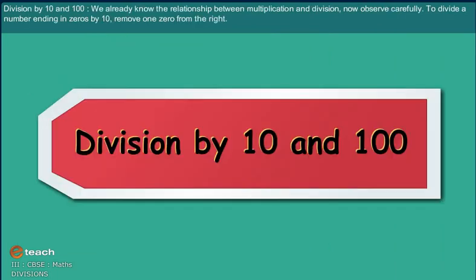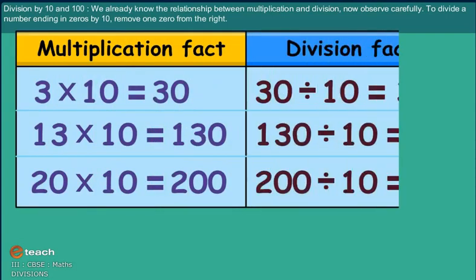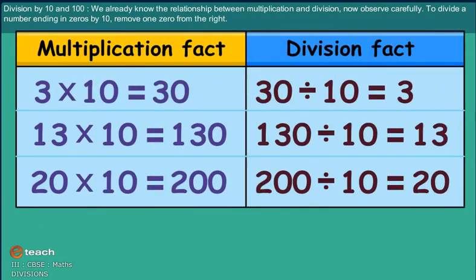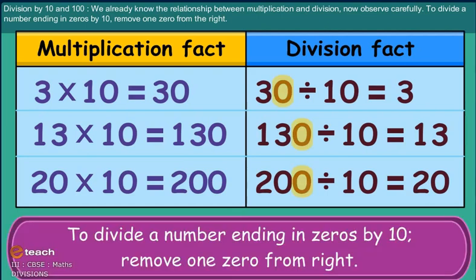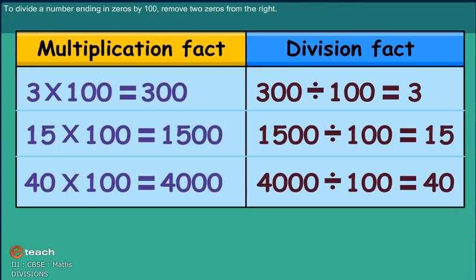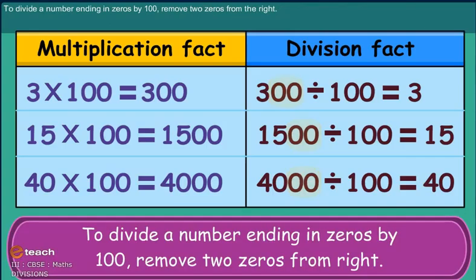Division by 10 and 100. We already know the relationship between multiplication and division. Now observe carefully. To divide a number ending in zeros by 10, remove one zero from right. Information box: to divide a number ending in zeros by 100, remove two zeros from right.